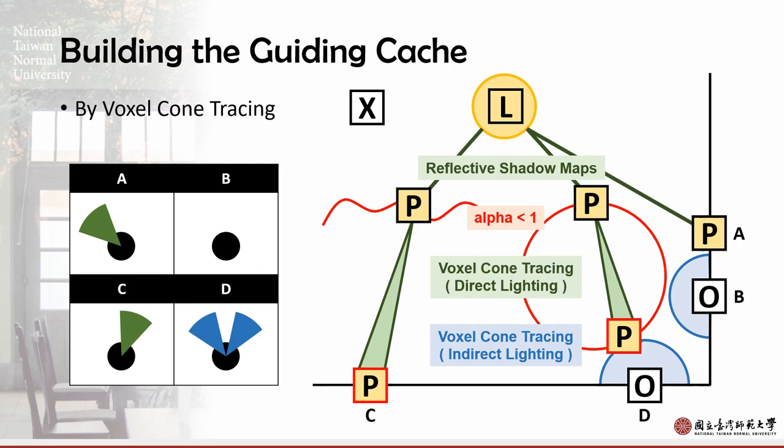Second, we build the guiding caches using reflective shadow maps to learn direct lighting, and learn indirect lighting and caustics with voxel cone tracing. For example, voxel A learns direct lighting, voxel C learns water caustics, and voxel D learns caustics of the sphere and indirect lighting.